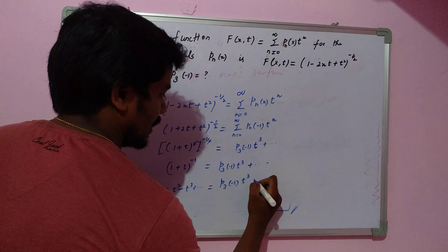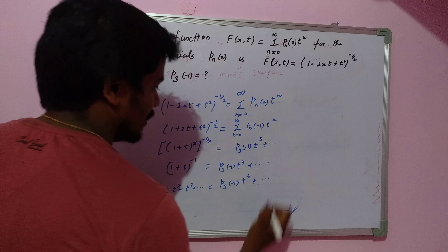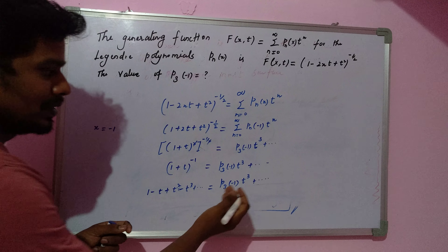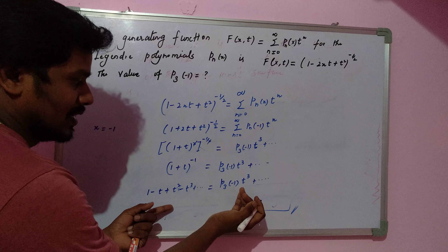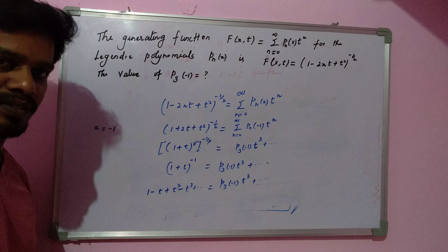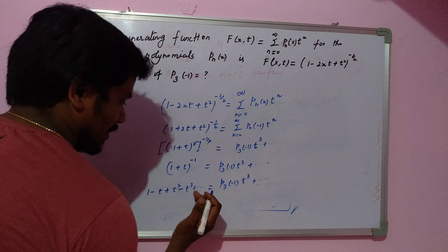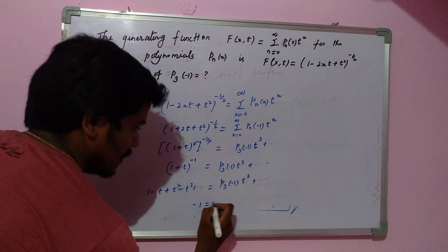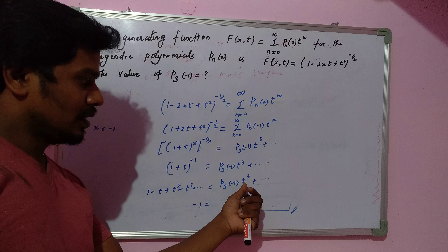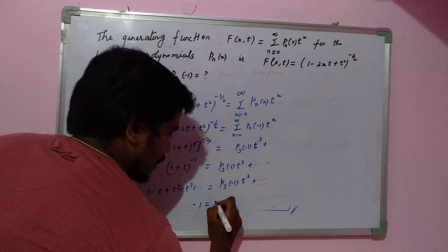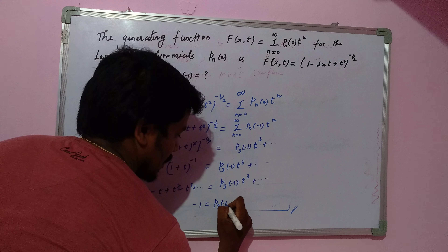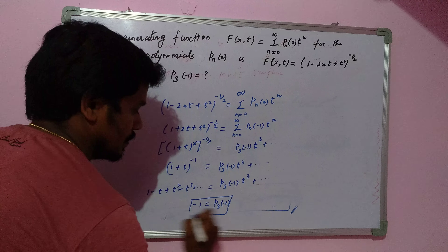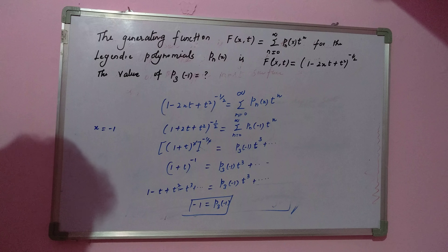There are several terms on the right-hand side, but we need P₃(-1), so we pick up the coefficient of t³ on both sides. On the left-hand side, the coefficient of t³ is minus 1. On the right-hand side, the coefficient of t³ is P₃(-1). Therefore, the value of P₃(-1) equals minus 1. That's the answer.